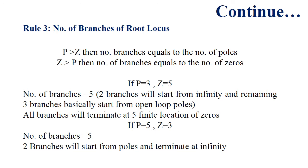Now if we take the example in which the number of poles is 5 and zeros is 3, the number of branches will equal the number of poles because poles are greater than zeros — so number of branches equals 5. The difference between poles and zeros is 2, so 2 branches will be associated with poles and 3 branches show the rotation of zeros, also starting from the open-loop poles. All branches will terminate at infinity.